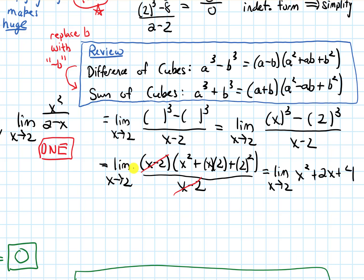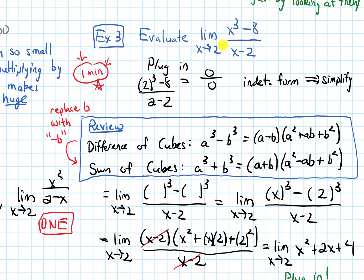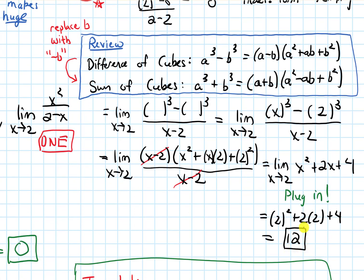Notice that the x - 2 in the denominator that was making it zero is now gone, so let's plug in. Plugging in 2: we get 2² + 2(2) + 4 = 4 + 4 + 4 = 12. We actually looked at this example in a previous section and evaluated it using a graph, and we got the exact same answer of 12.